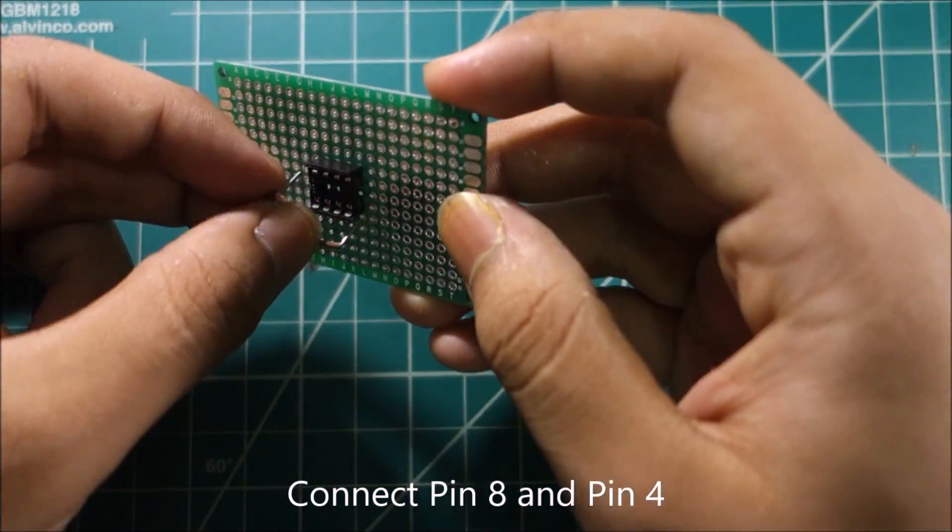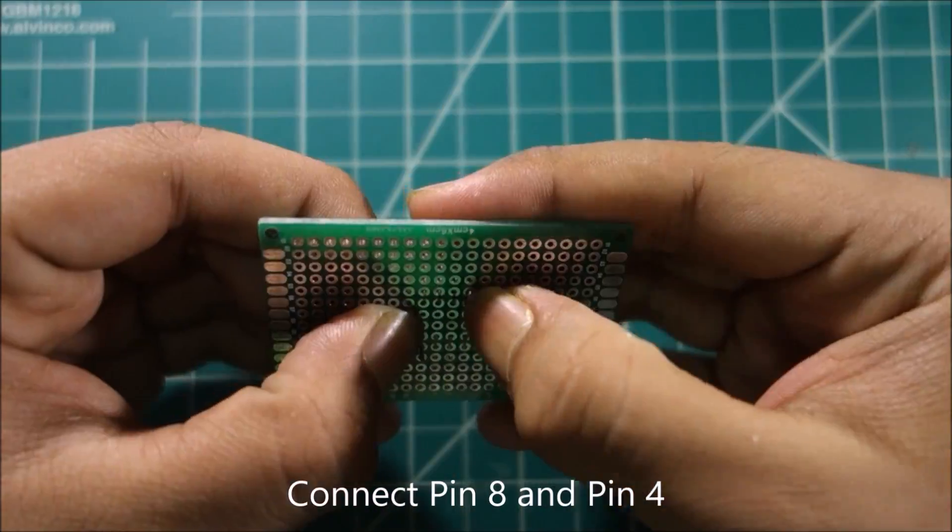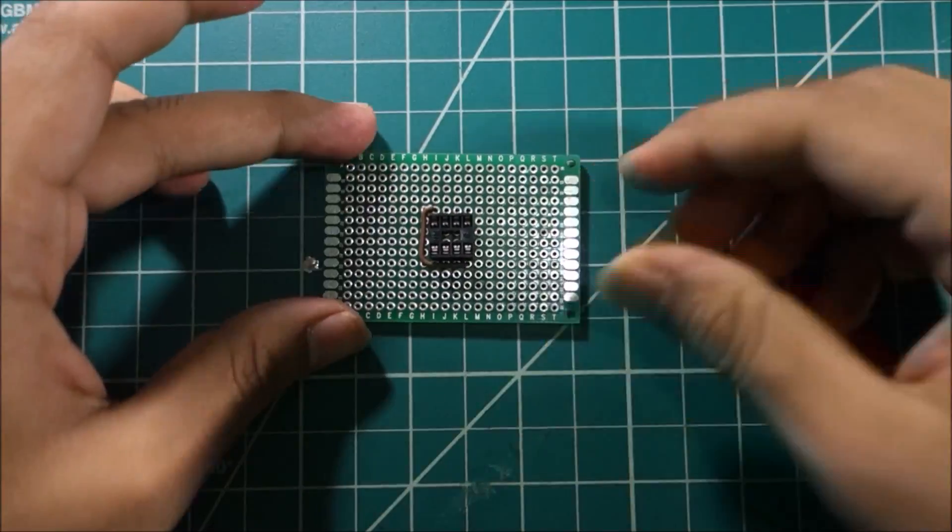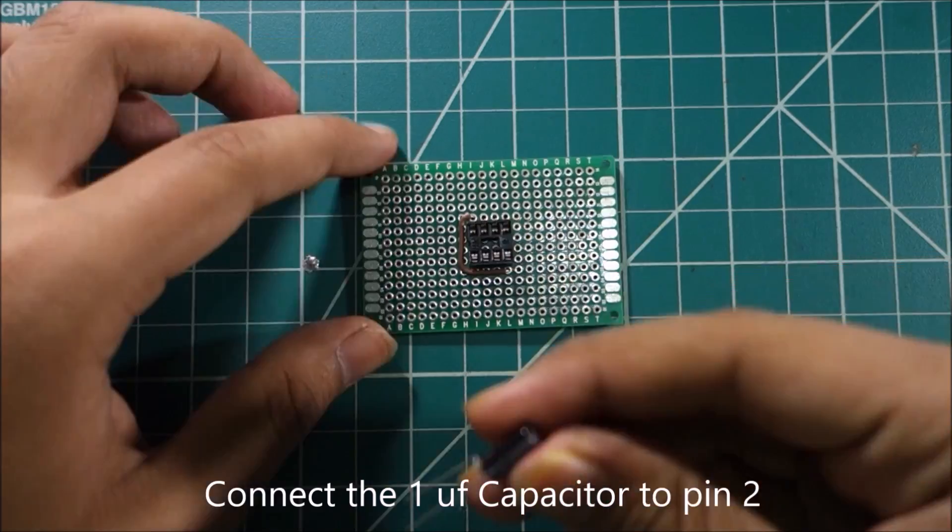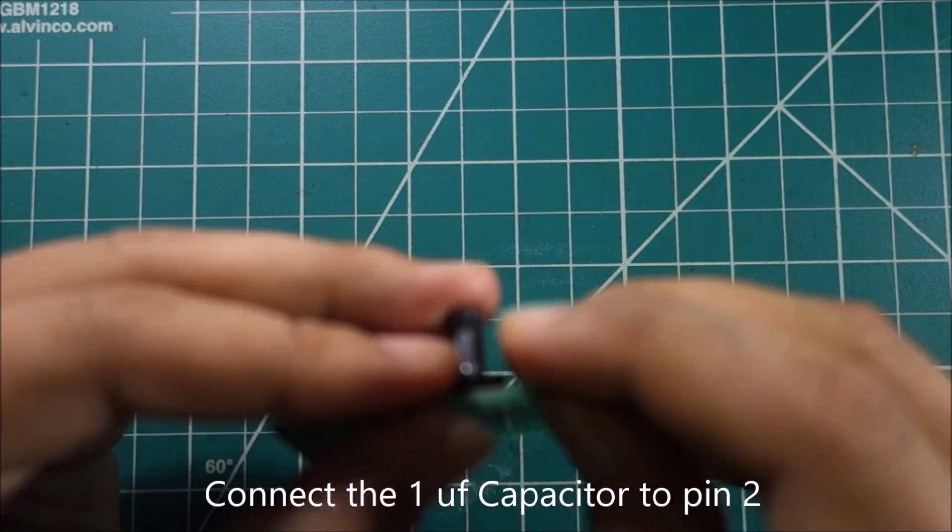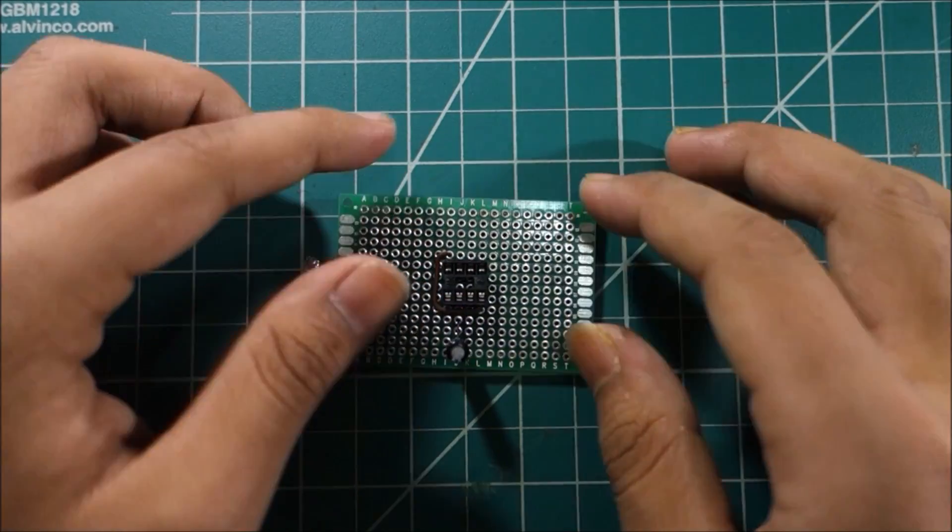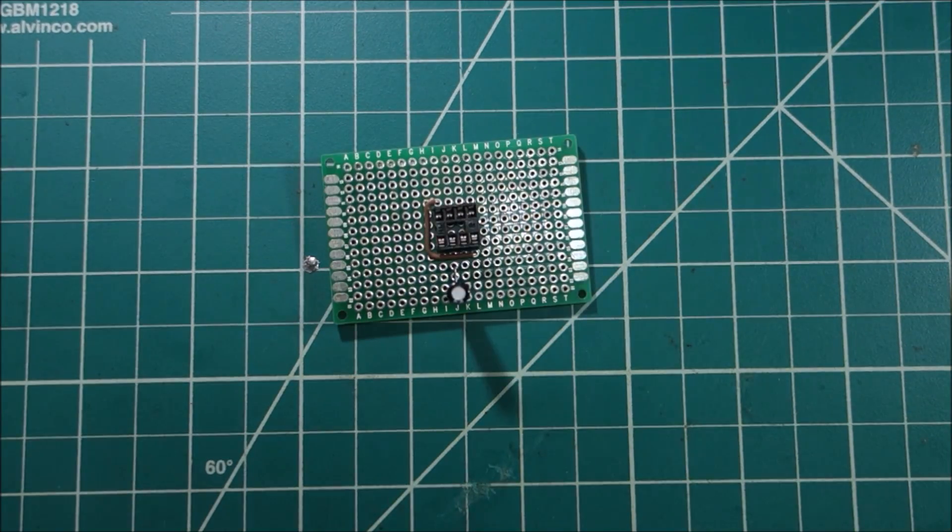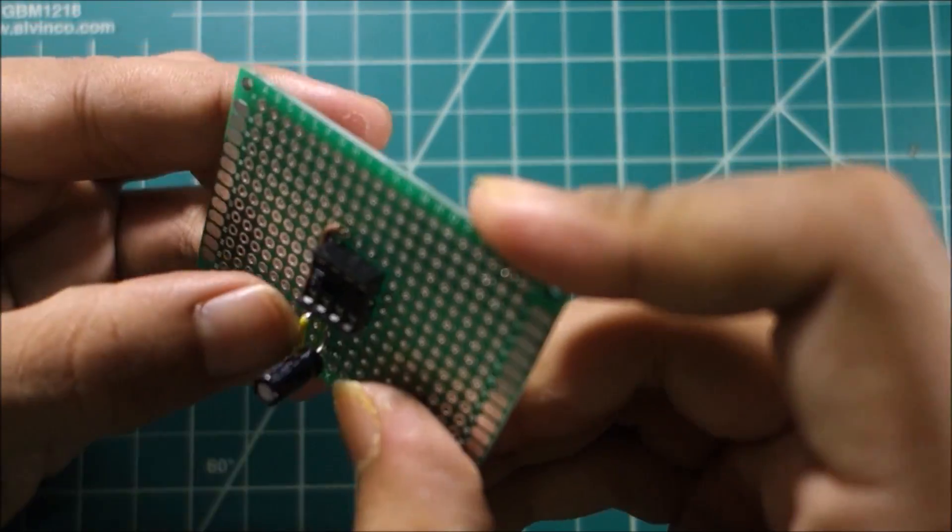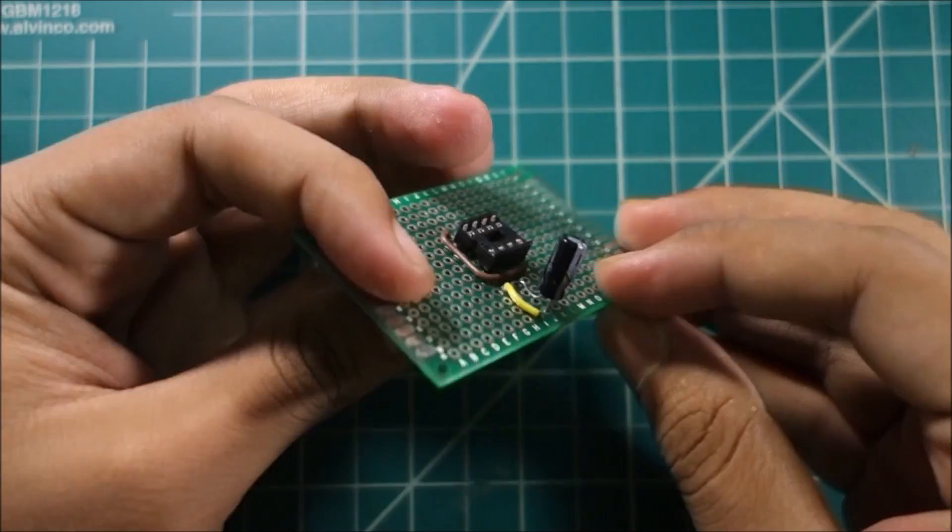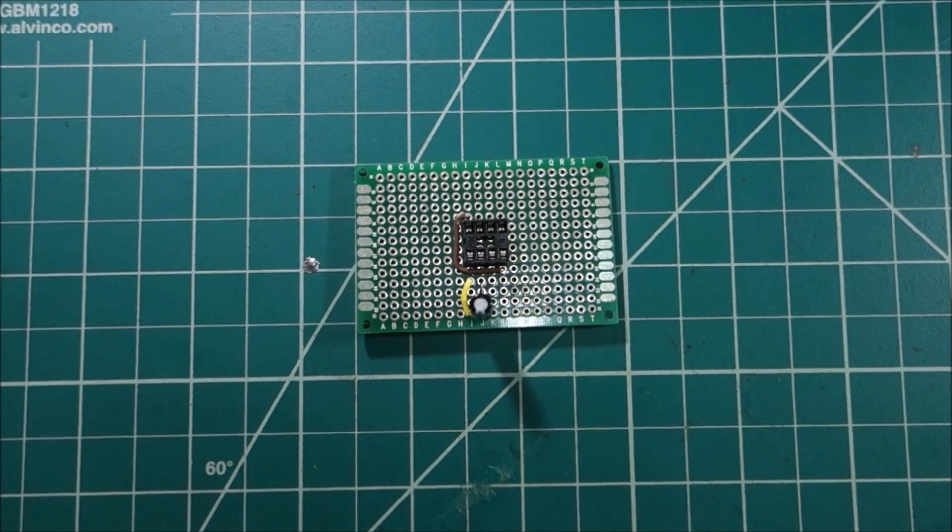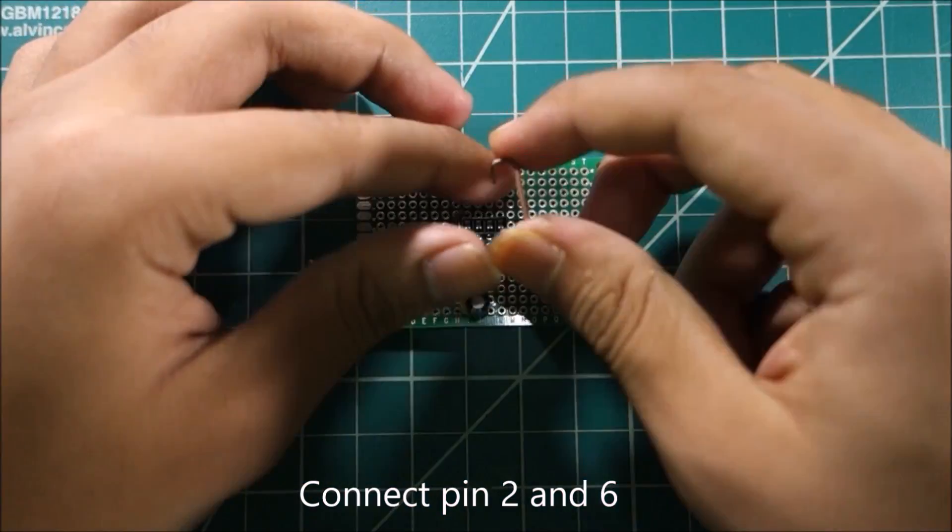Connect pin 8 and pin 4 of the socket. Connect the 1 UF capacitor to pin 2. Connect the jumper wire to pin 1. Connect pin 2 and 6.